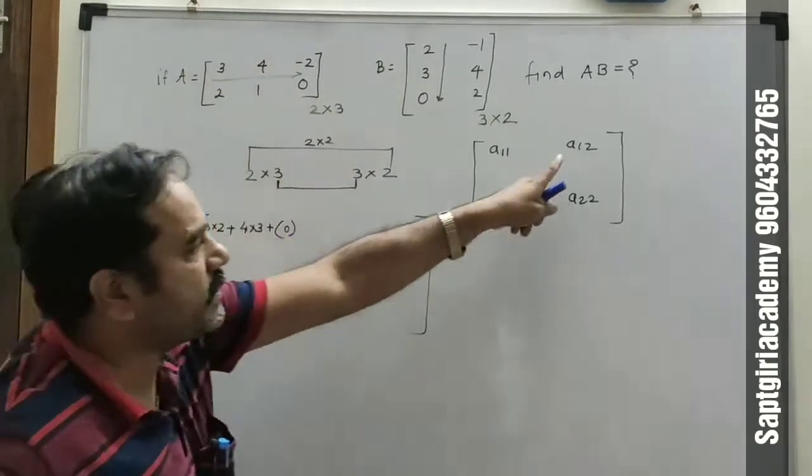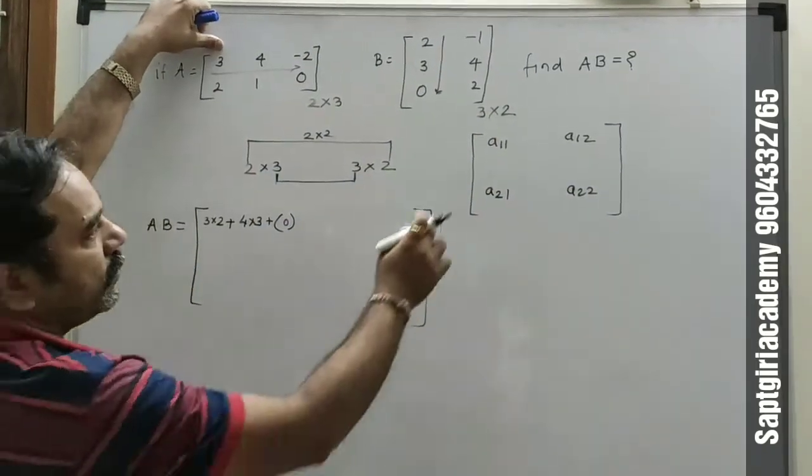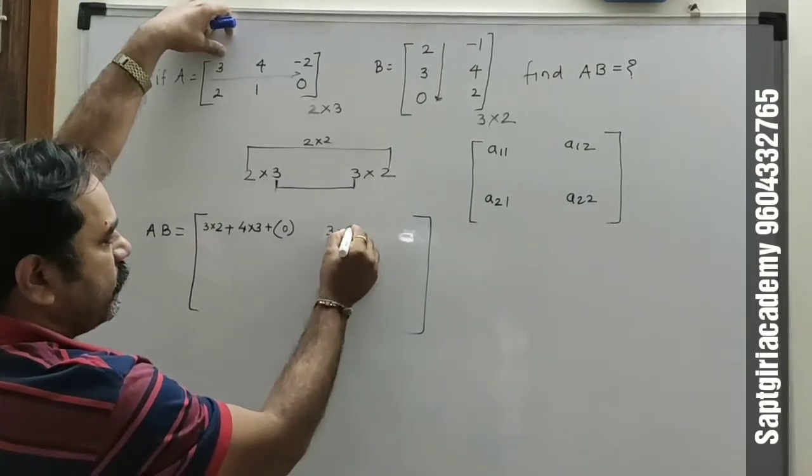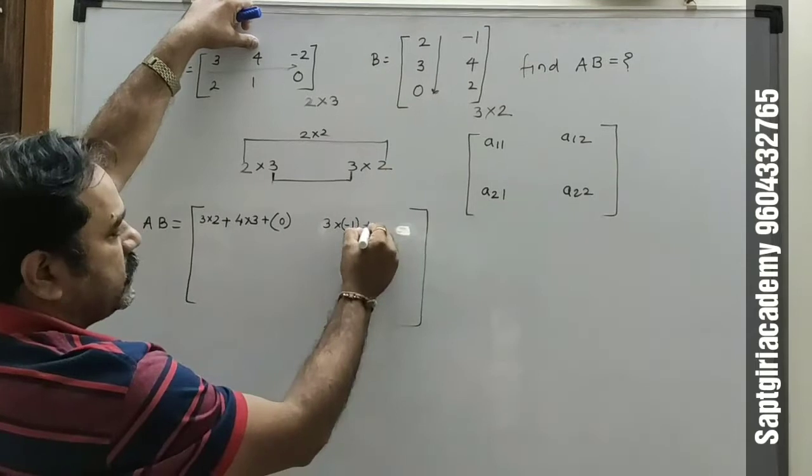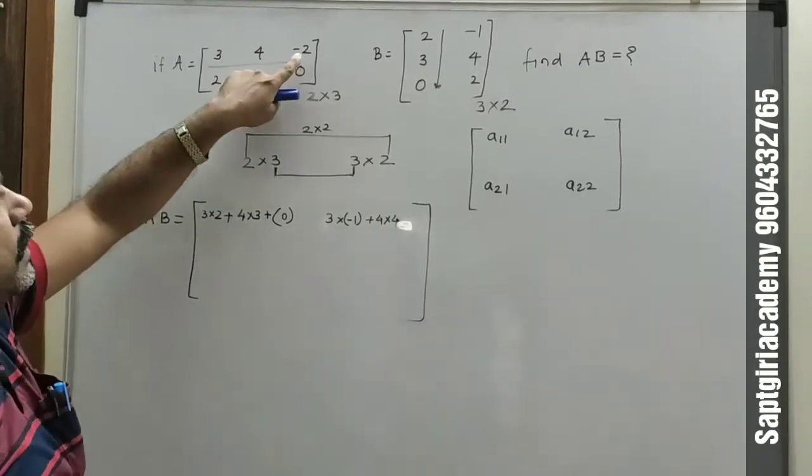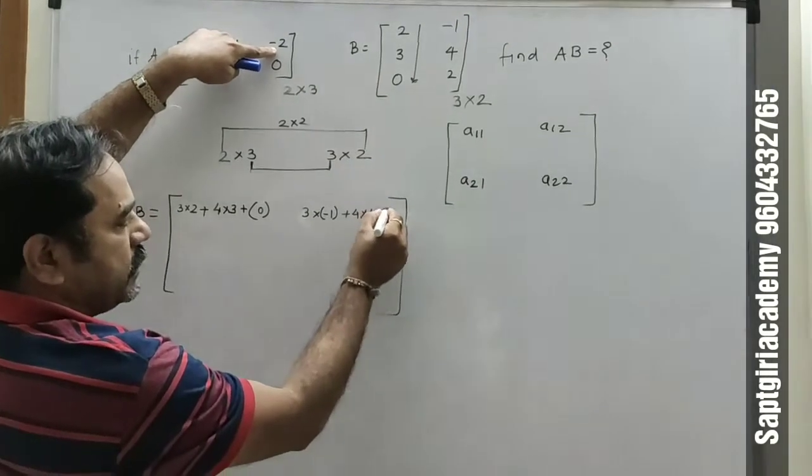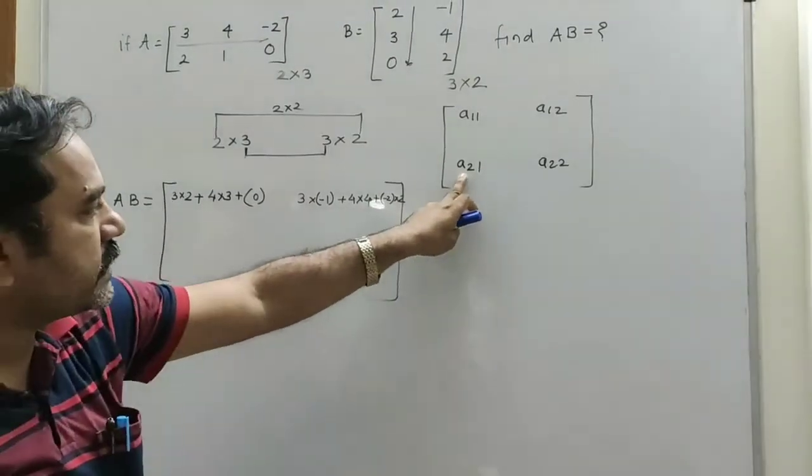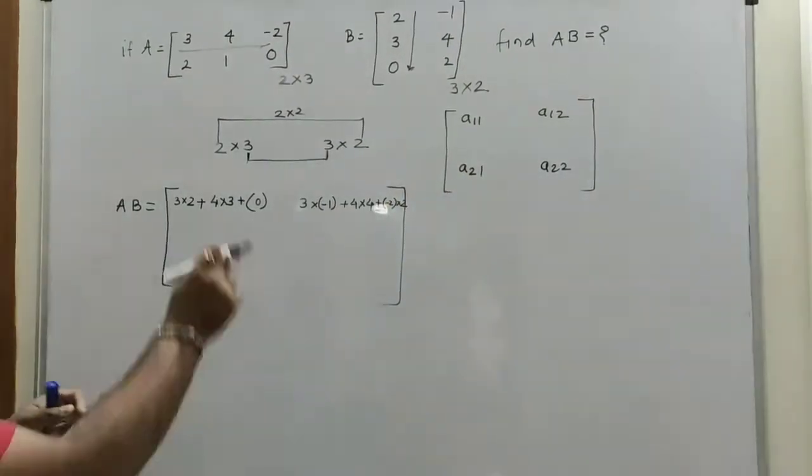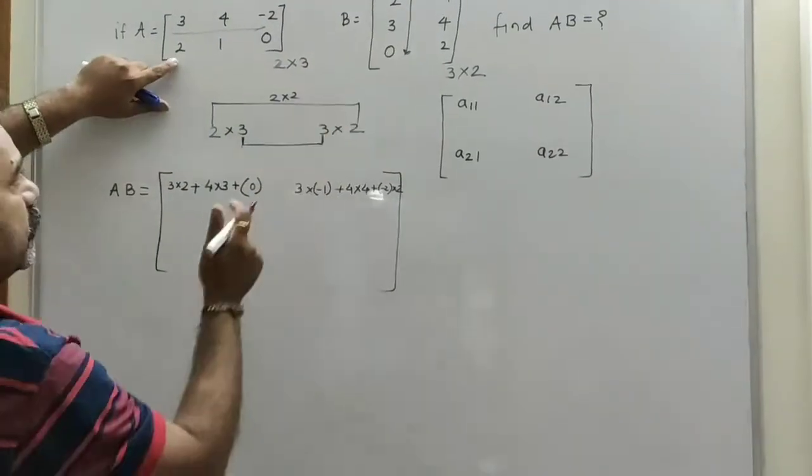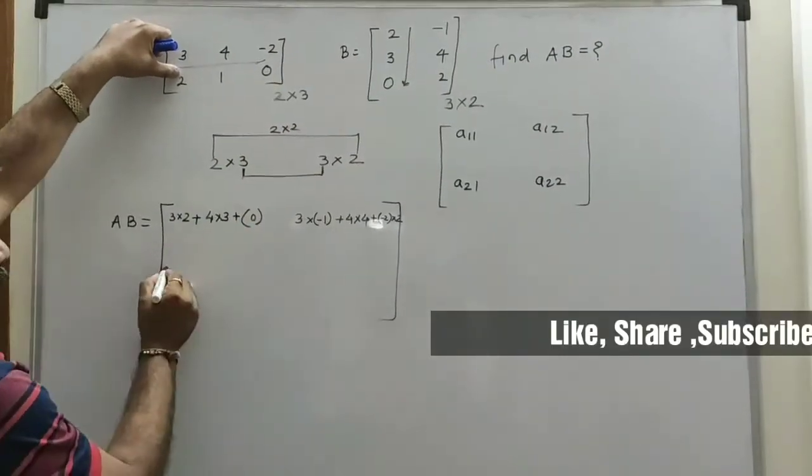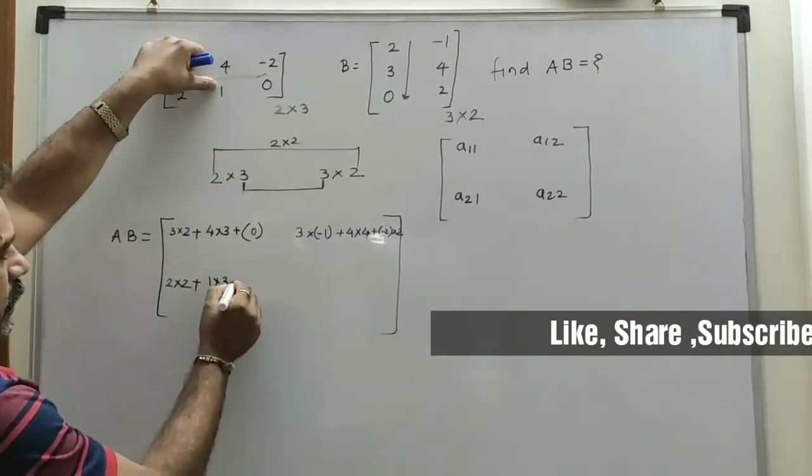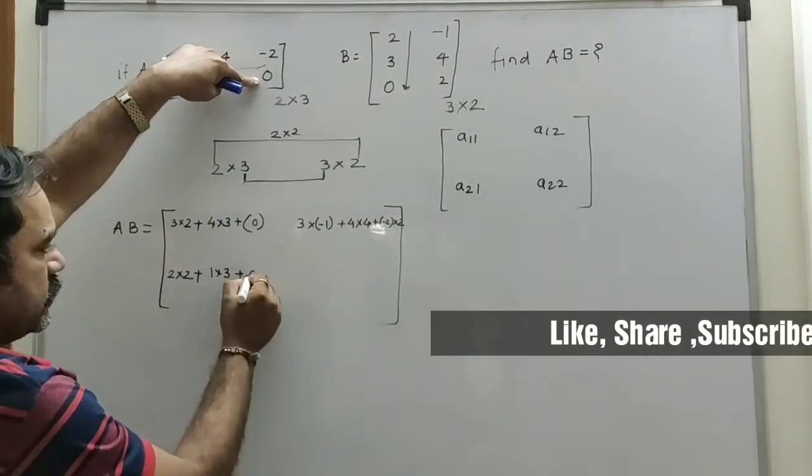The second element is A12. That means first row and second column. So 3 into minus 1 plus 4 into 4 plus minus 2 into 2.